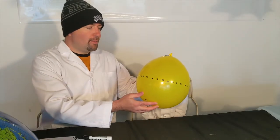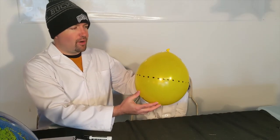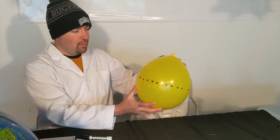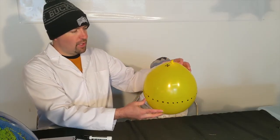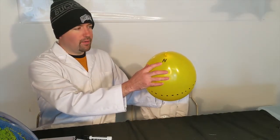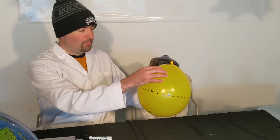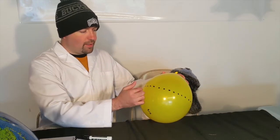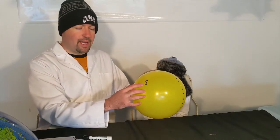All right, so on our balloon here, this is going to represent our Earth, just easier to see with it being a yellow balloon instead of using a globe. And I want you to see that there are a couple things I've marked on here, and that would be an N for the North Pole. We've got our equator here, and we have an S for the South Pole.